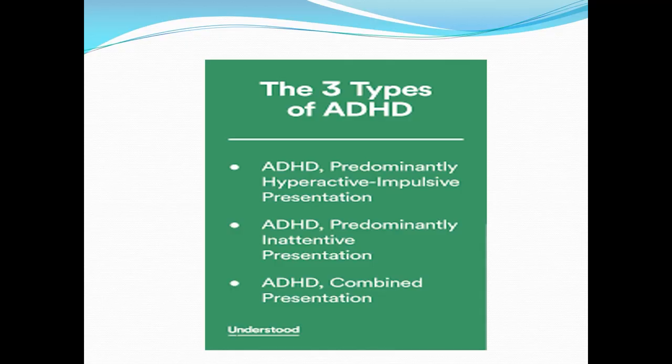There are three subtypes in ADHD. ADHD is the umbrella term and within that we've got three different types. The first is the hyperactive-impulsive subtype, where predominantly the features are hyperactive and impulsive behaviours. The second subtype is inattentive, where the predominant features are inattentiveness and problems with concentration and focus. The most common type is ADHD combined, which encompasses all three areas: inattention, impulsivity and hyperactivity.